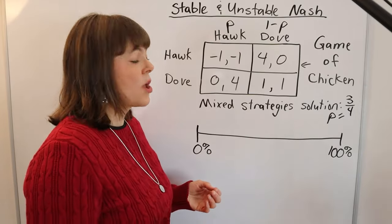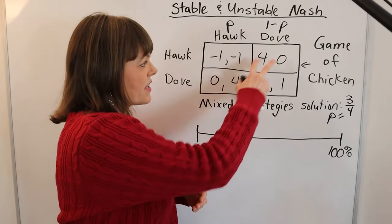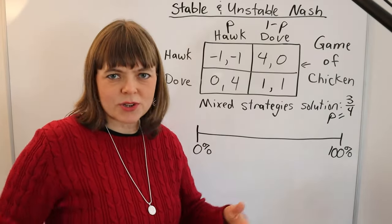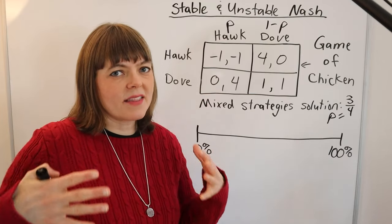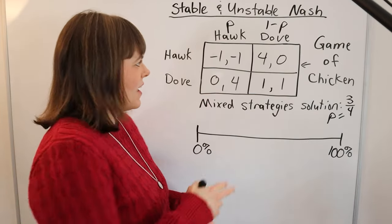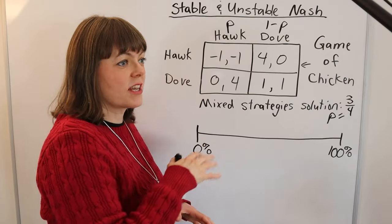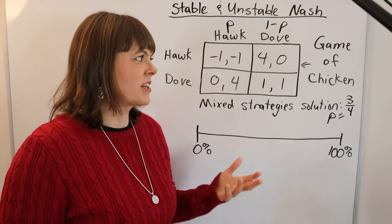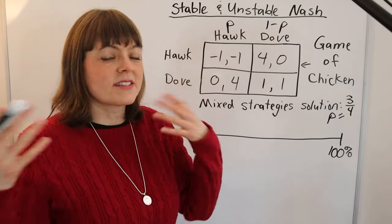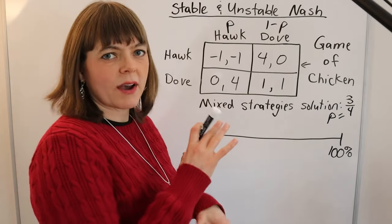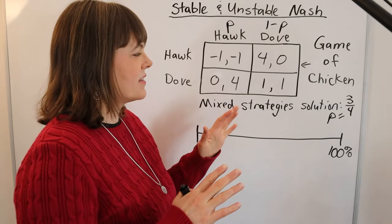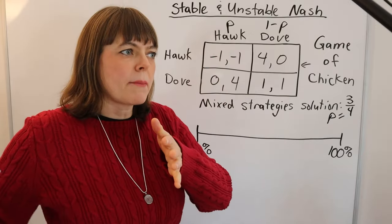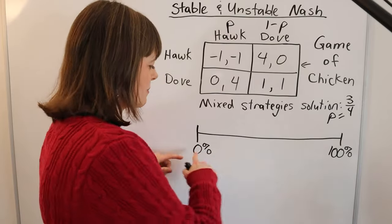In an evolutionary environment, the payoffs in this table translate in some way to children, grandchildren, or to how the system evolves. If the hawk strategy is more successful, the population will evolve toward having more hawks, and the same is true of the dove strategy. So the question is: can you have a population with a stable share of hawks versus doves, or will the population tend toward one or the other end of the spectrum?